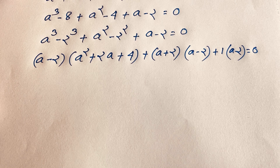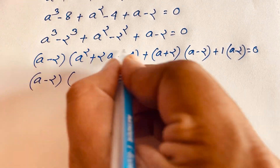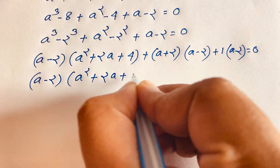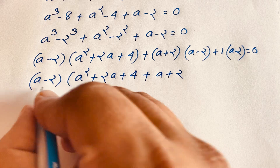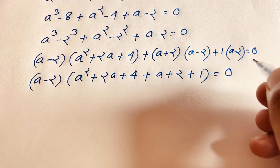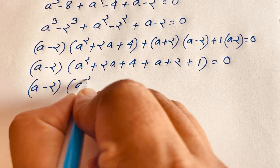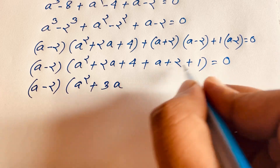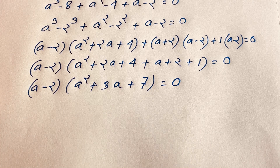Since (a minus 2) is a common factor, we factor it out. Dividing each group by (a minus 2), we get: (a minus 2) times (a squared + 2a + 4 + a + 2 + 1) equals 0, which simplifies to (a minus 2)(a squared + 3a + 7) equals 0.